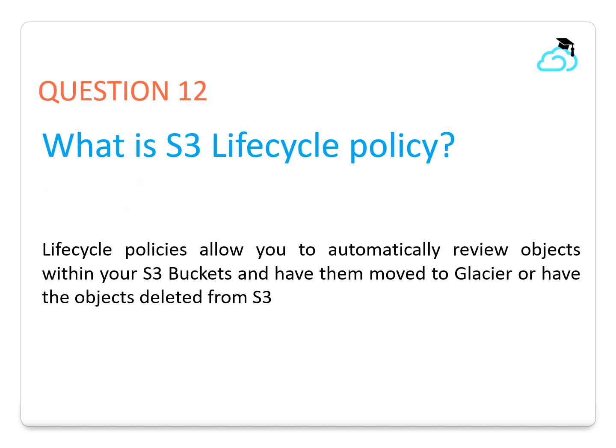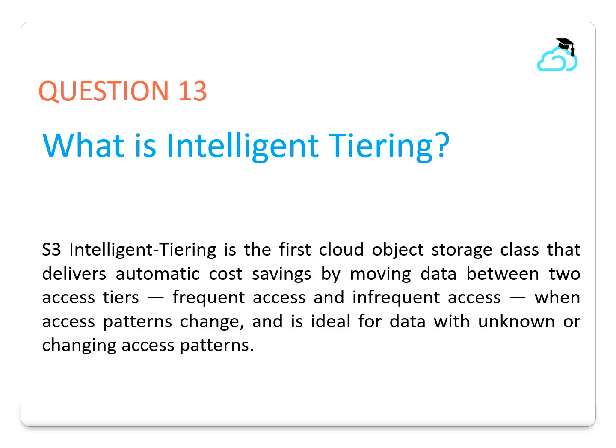Question 12: What is S3 lifecycle policy? Lifecycle policies allow you to automatically review objects within your S3 buckets and have them move to Glacier or have the objects deleted from S3. Question 13: What is S3 Intelligent-Tiering? S3 Intelligent-Tiering is the first cloud object storage class that delivers automatic cost savings by moving data between two access tiers — frequent access and infrequent access — when access patterns change. It is ideal for data with unknown or changing access patterns.